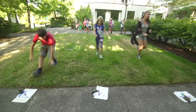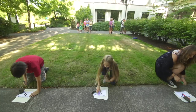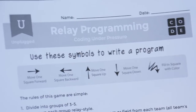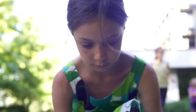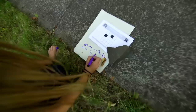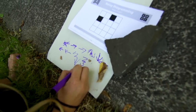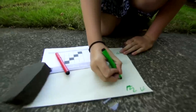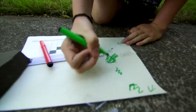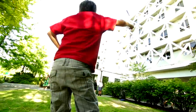In relay programming, teams will be racing to finish a graph paper program. You have to check your teammate's work, or debug it, fix it if there's a mistake, add your arrow, and then run back and tag your teammate.